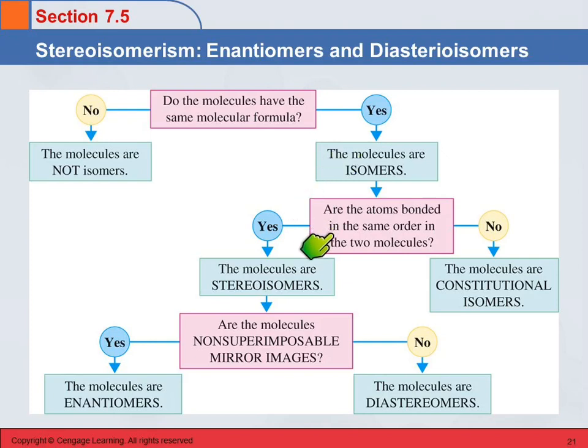Are the atoms bonded in the same order in the two molecules? If no, they are constitutional isomers. This is where the atoms are connected differently. So you might have a straight-chain alcohol versus a branch-chain alcohol, but their formulas are the same. Those are constitutional isomers.